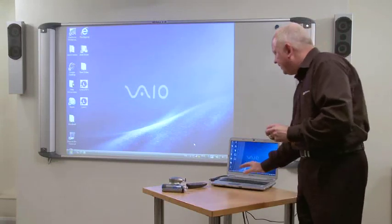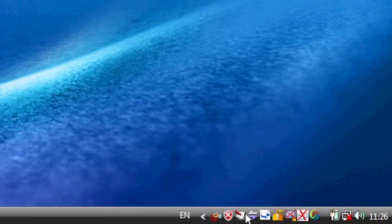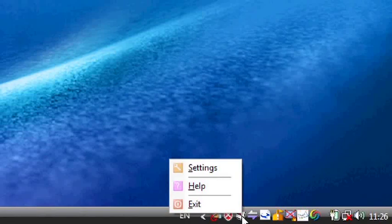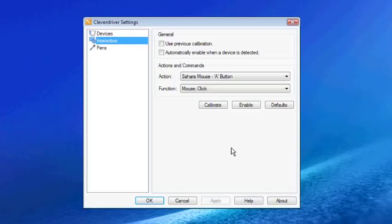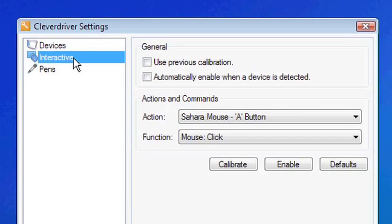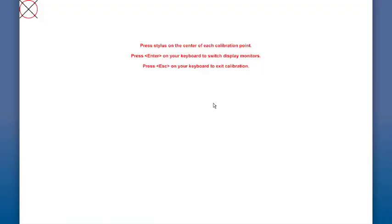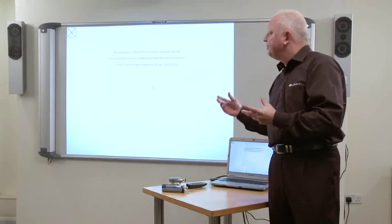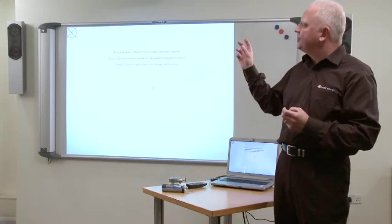The first thing that we do is bring the cursor and hover it over the Clever Driver icon. We then do a right mouse click and scroll up to settings. You must make sure that the word interactive is highlighted. Before you hit the calibrate button, just check that you've got a little tick in this use previous calibration box. This enables you to toggle between ink capture mode and interactive mode as you wish. We simply click on the calibrate button there, and it produces for us a white screen with a red circle and a cross on it.